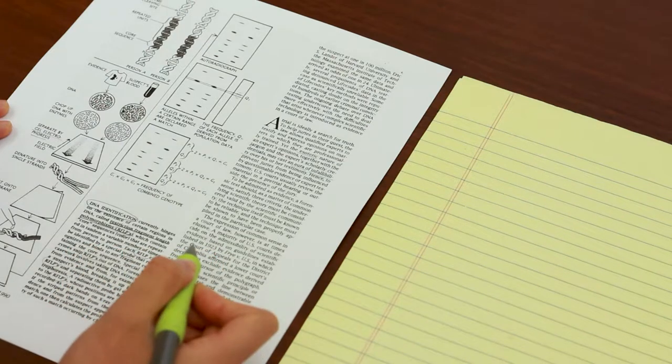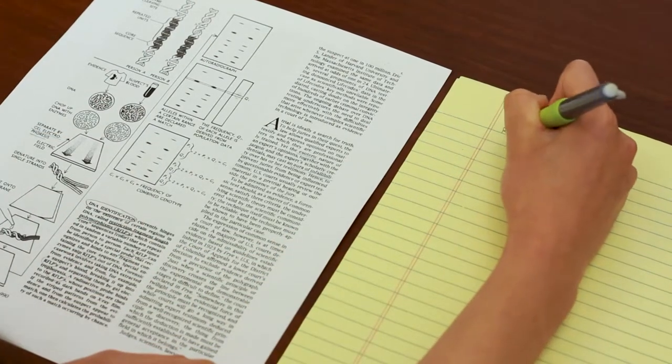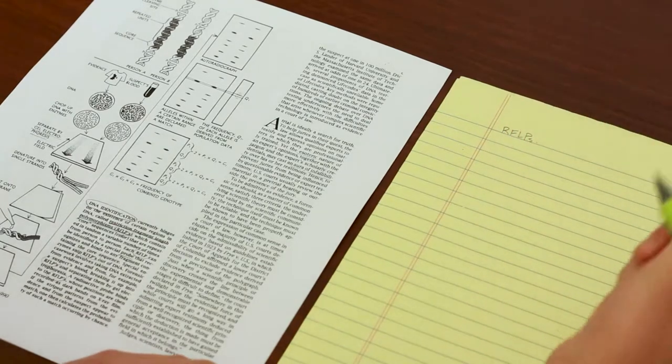For example, when I notice that I'm underlining the same word several times, I'll circle it instead and make a note in the margins so I don't forget about it later on.